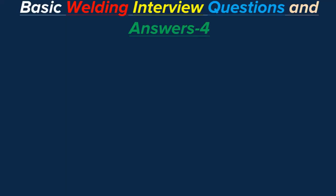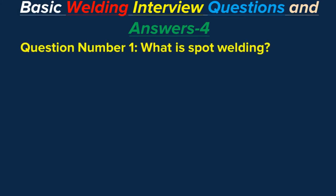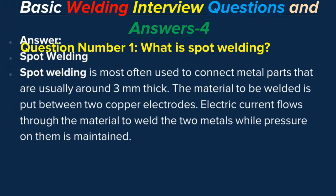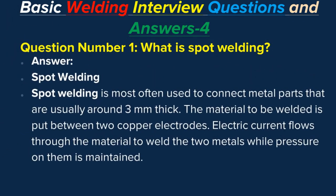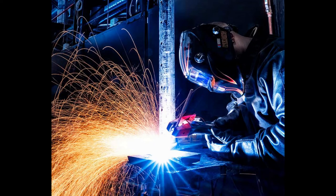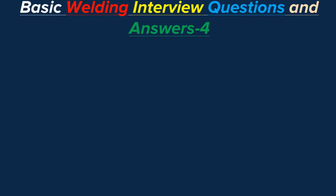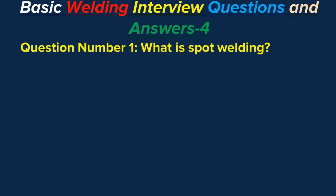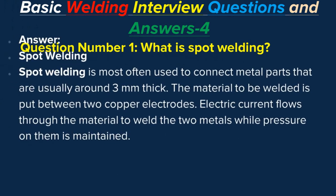Question number one: What is spot welding? Answer: Spot welding is most often used to connect metal parts that are usually around three millimeters thick. The material to be welded is placed between two copper electrodes. Electric current flows through the material to weld the two metals while pressure is maintained on them.